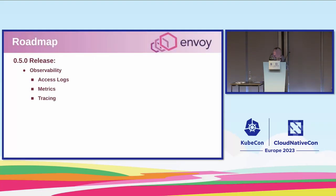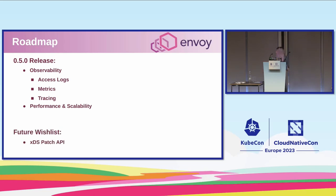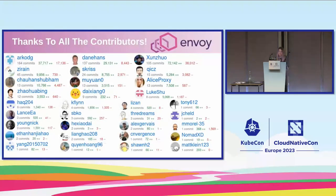Quick roadmap for what's coming up. The 0.5.0 release is up next and it's going to be focused on observability, performance, and scalability. We already know we want to add access log control, metrics, and tracing, and we really want to fine-tune the performance of Envoy Gateway so you can feel comfortable running it in production. We also have a future wish-list item of an XDS patch API, which would provide a public API for end users to create resources in the cluster or on the file system so that you can patch XDS resources with your custom config.